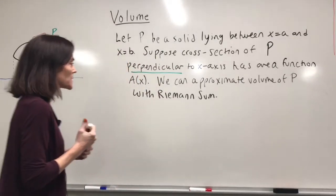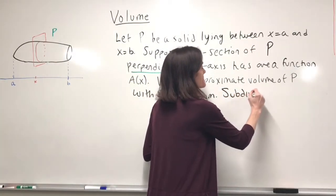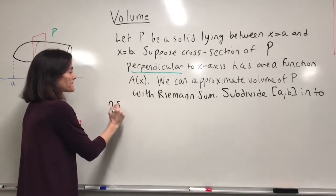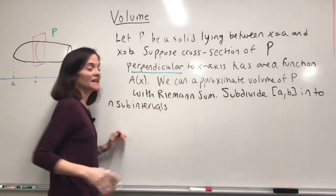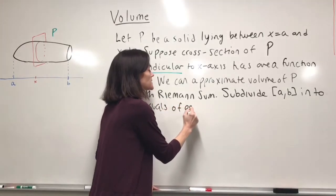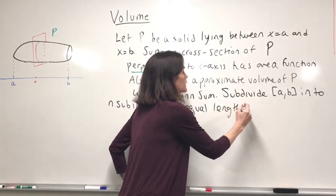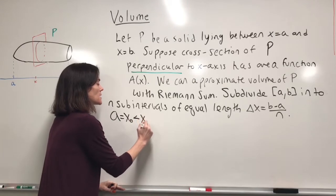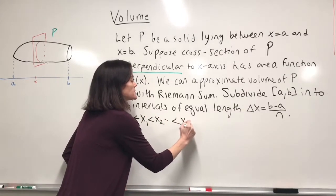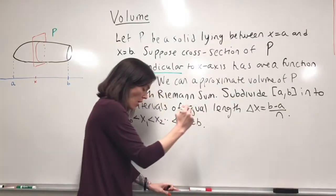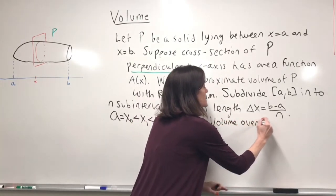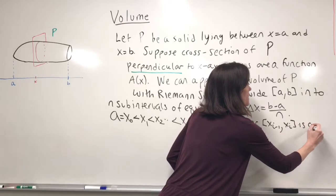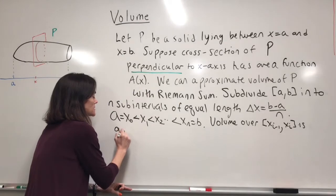How do Riemann sums always work? We subdivide the interval a to b into n subintervals of equal length delta x, which is b minus a over n. We make our Riemann sum partition x₁ less than x₂ less than xₙ, which is b. Then the volume over the subinterval from xᵢ₋₁ to xᵢ is approximately — let's draw a picture.